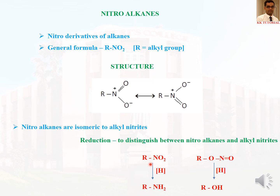We can easily distinguish between nitroalkanes and alkyl nitrites. Nitroalkanes on reduction give amines, while alkyl nitrites on reduction give alcohols. Since nitrogen is attached to carbon in nitroalkanes, the product is R-NH2. In alkyl nitrites, oxygen is connected to the R group carbon, so the product is R-OH. Nitroalkanes on reduction give amines, while alkyl nitrites on reduction give alcohols.